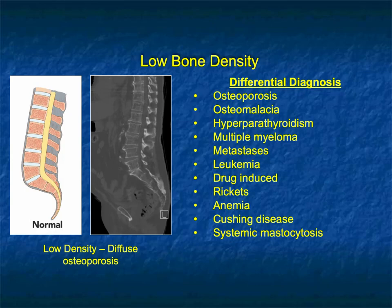Next, diffuse osteoporosis — a common finding, particularly in older patients and more common in women. When you see loss of bone, you could think of osteoporosis or osteomalacia, hyperparathyroidism, multiple myeloma which gives really washed out bone often with a destructive pattern, metastasis, infiltrating tumors like leukemia, drug-induced causes, rickets, anemia, Cushing's disease, and systemic mastocytosis. There's a very large differential diagnosis. In this case, there are some osteophytes and degenerative change, but very low bone density with vertebral bodies maintaining their height — this was diffuse osteoporosis.